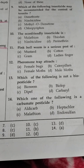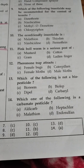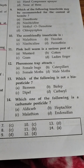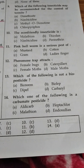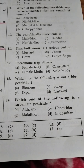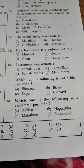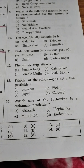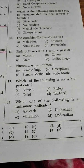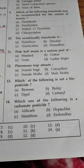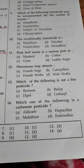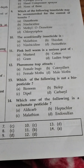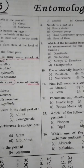Question number 13: Which of the following is not a biopesticide? Option A Bioneem, option B Biolep, option C Dipel, option D Carbaryl. Carbaryl is not a biopesticide. Question number 14: Which of the following is a carbamate pesticide? Option A aldicarb, option B heptachlor, option C malathion, option D endosulfan. Aldicarb is a carbamate pesticide. Remember: all compounds with the 'carb' suffix are carbamate pesticides. That's all for today, thank you very much.